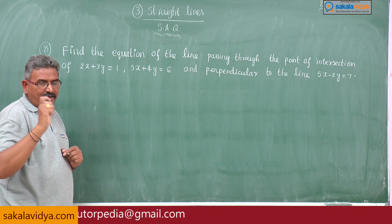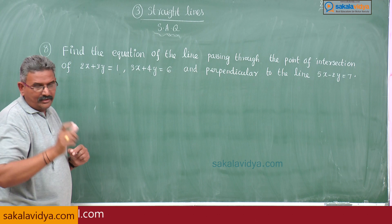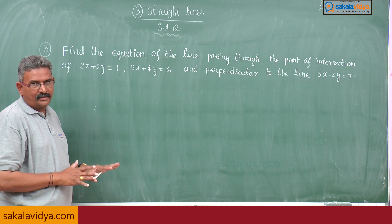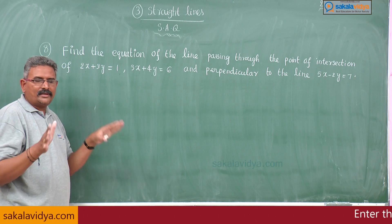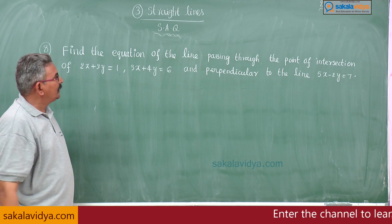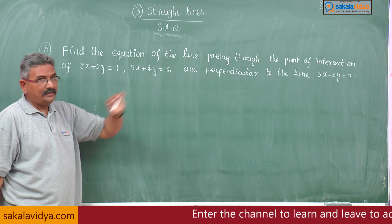We can decide step 1 with the help of that keyword. Step 1 is solving these two equations to get the point of intersection. In the examination, you may score 4 marks if you solve the first step. The next keyword is perpendicular to the line.